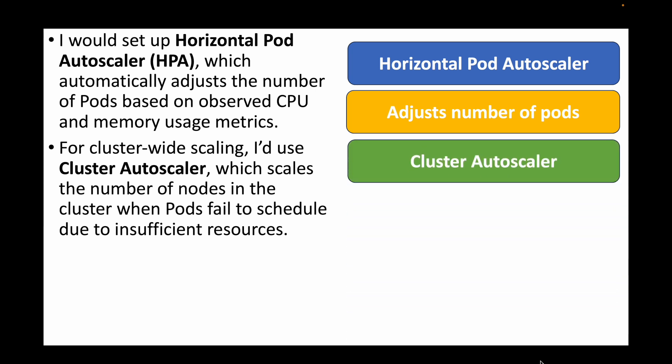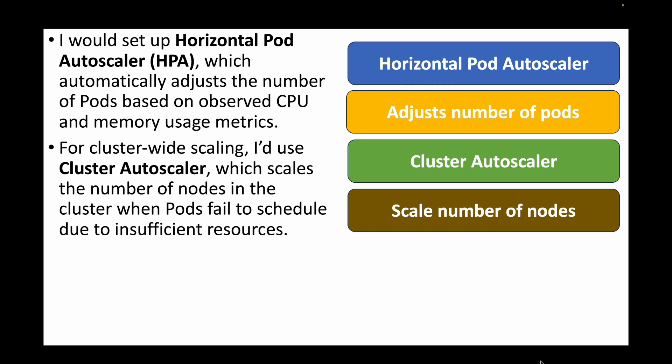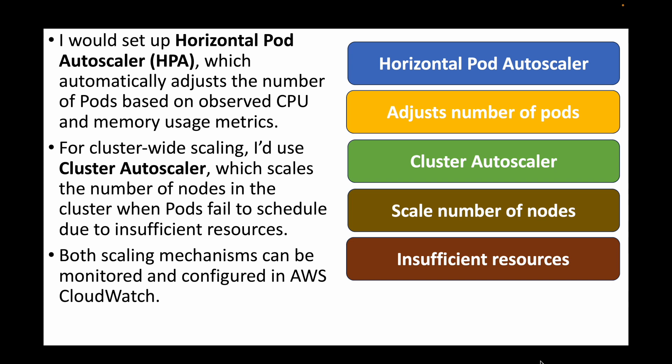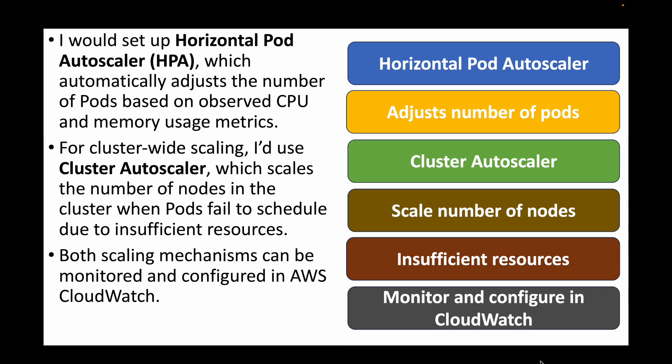For cluster-wide scaling, we can make use of the Cluster Autoscaler, which scales the number of nodes within the cluster whenever a pod fails to schedule due to insufficient resources — such as high CPU or high memory. Both scaling mechanisms can be configured and monitored in AWS CloudWatch to continuously track resource usage and cluster activity.